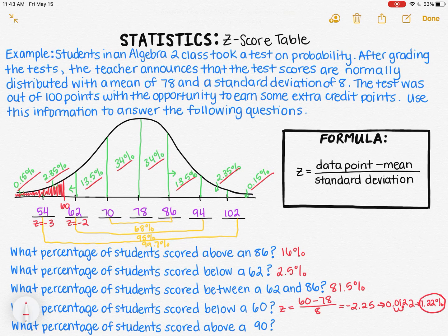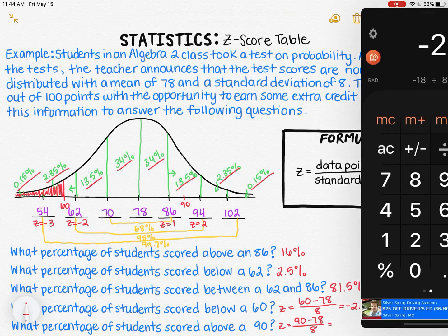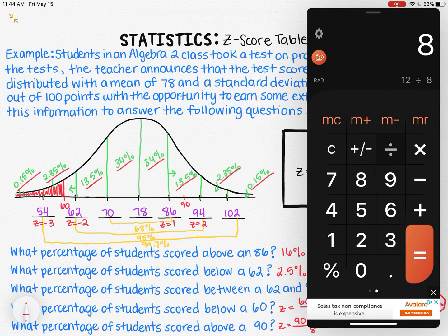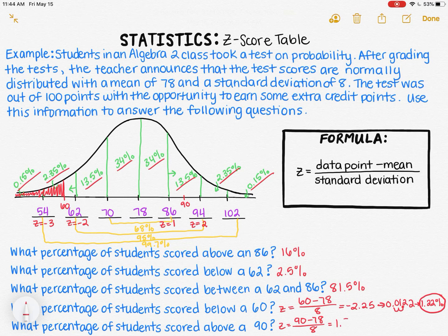The next question asks: what percentage of students scored above a 90? Again, 90 is not already labeled — it falls between 86 and 94. The Z-score for 86 is 1 and for 94 is 2, so the Z-score for 90 will be between 1 and 2. Using the formula: Z equals 90 minus 78 divided by 8, which gives me 1.5. I'll note there's an invisible 0 after the 5, making it 1.50. The table gives the area to the left, but I want the area to the right since I'm looking for students that scored above a 90.